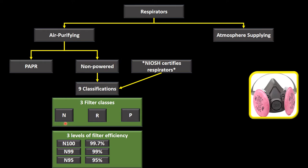The N-class is not meant to be used in the presence of oil aerosols. The R-class is oil resistant but for a single shift only. The P-class is oil proof and can be used in the presence of oil aerosols.